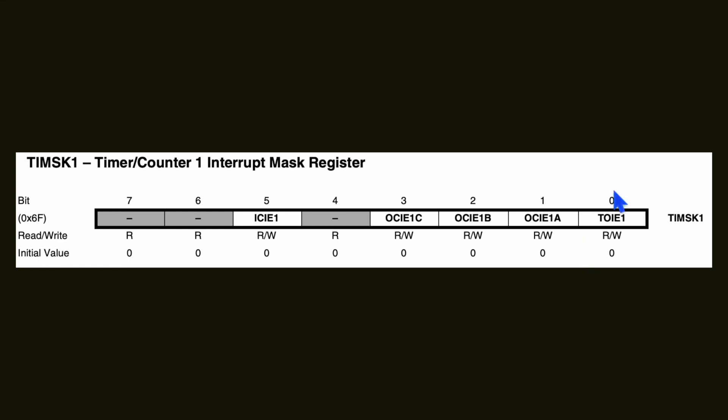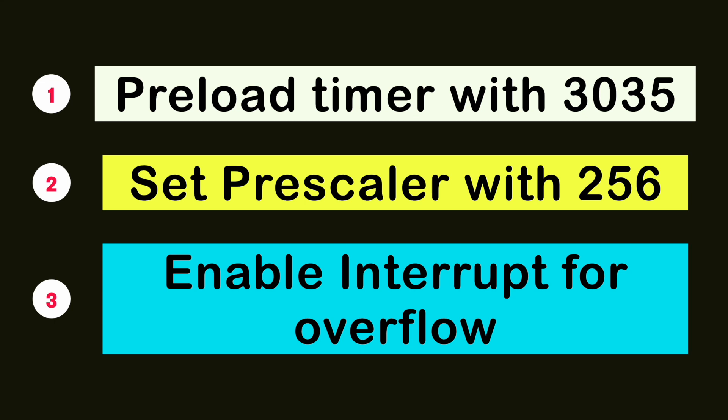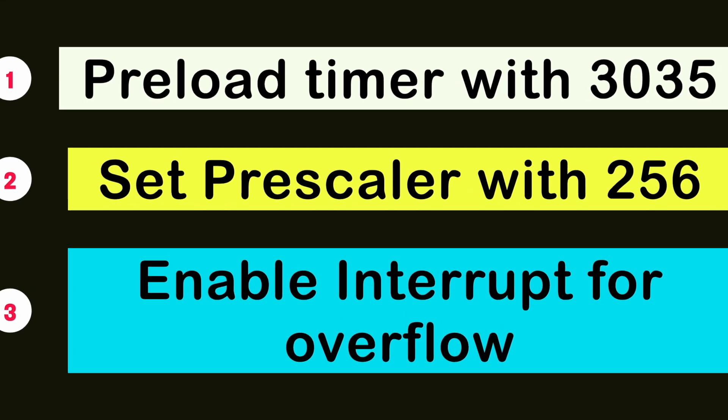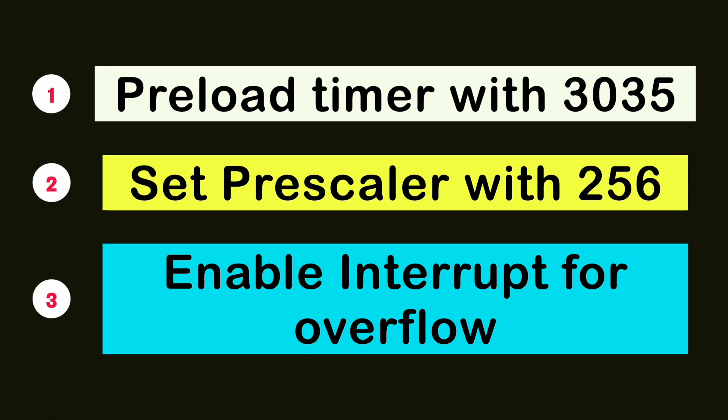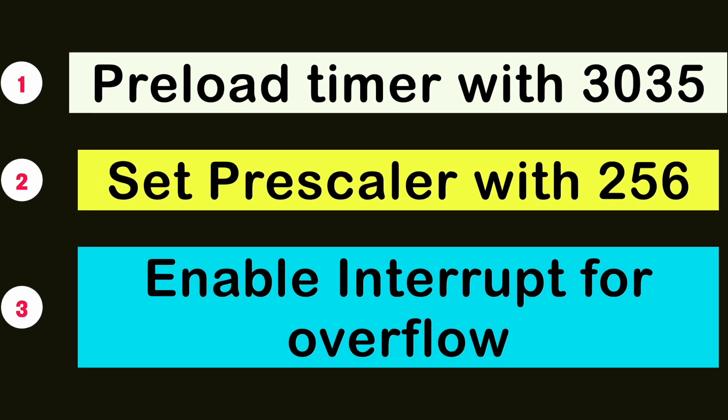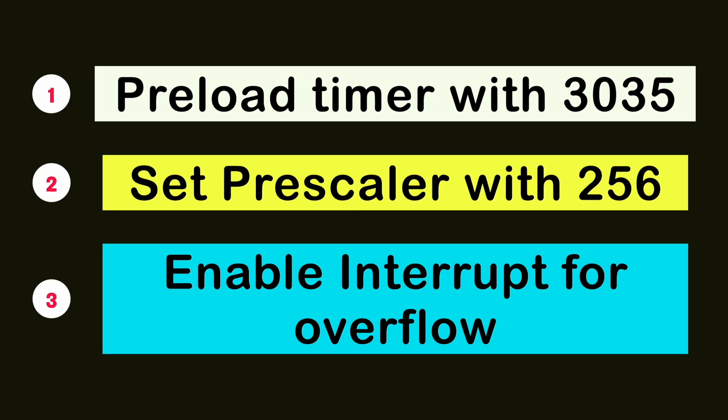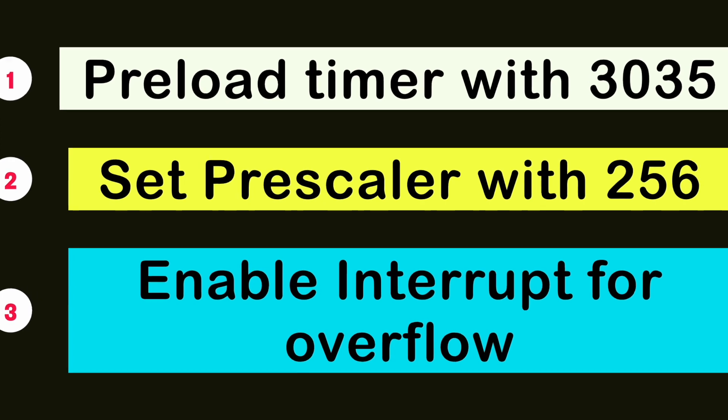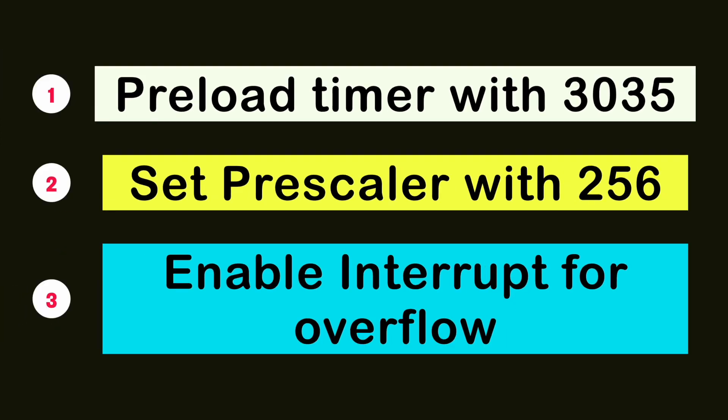So the steps are: first, preload the timer with value 3035 so it reaches the maximum value in exactly one second; second, select the pre-scaler value of 256 in the control register so Timer 1 runs at 16 MHz / 256; and third, enable the overflow interrupt so the interrupt routine executes when the timer overflows.